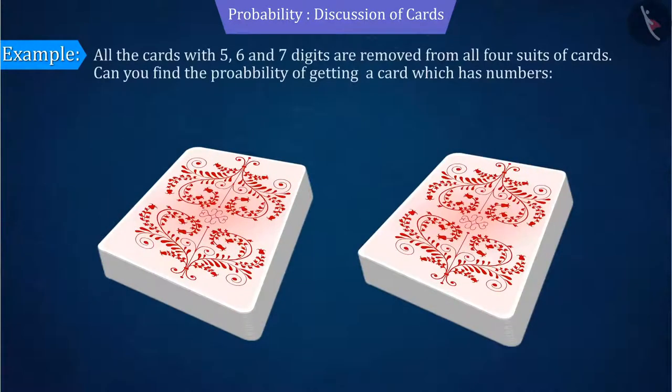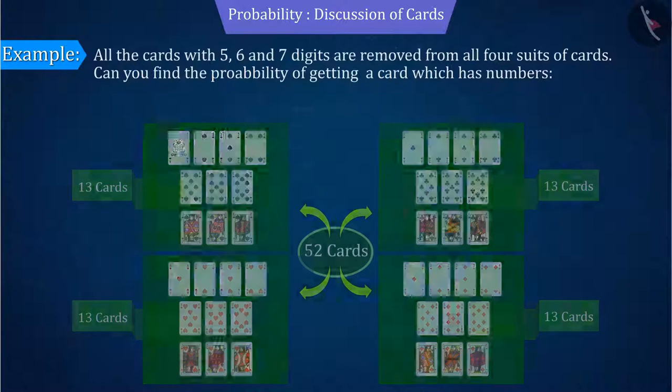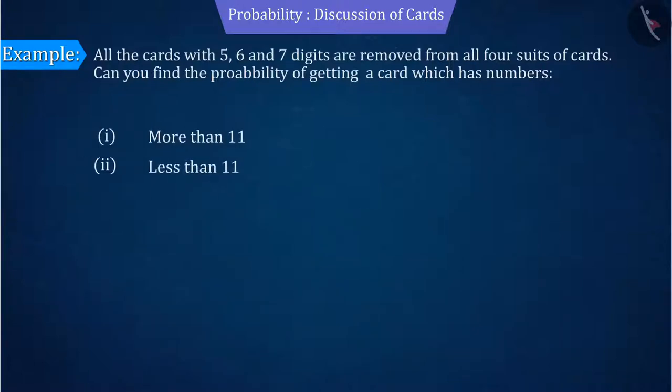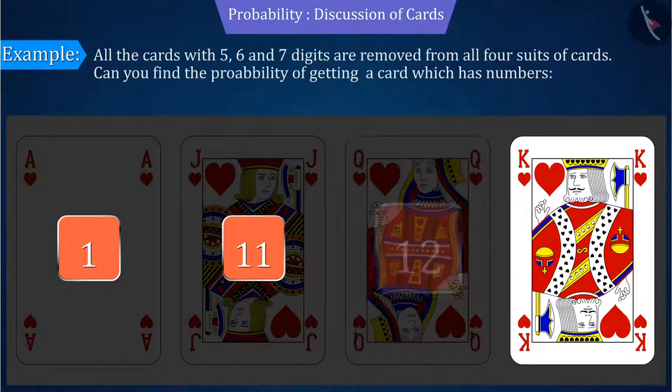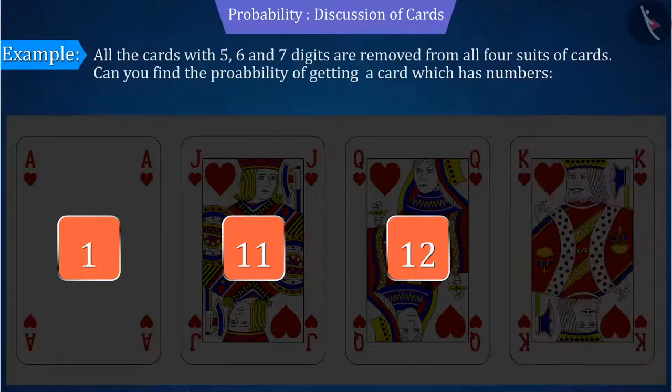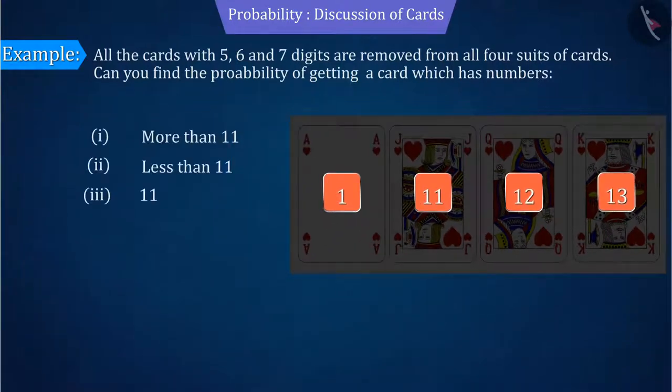All the cards with 5, 6 and 7 digits are removed from all four suits of cards. Can you find the probability of getting cards which have numbers more than 11, less than 11, and equal to 11? Where Ace is given the value of 1, Jack is 11, Queen is 12, King is 13, and other cards are also named in a similar manner.